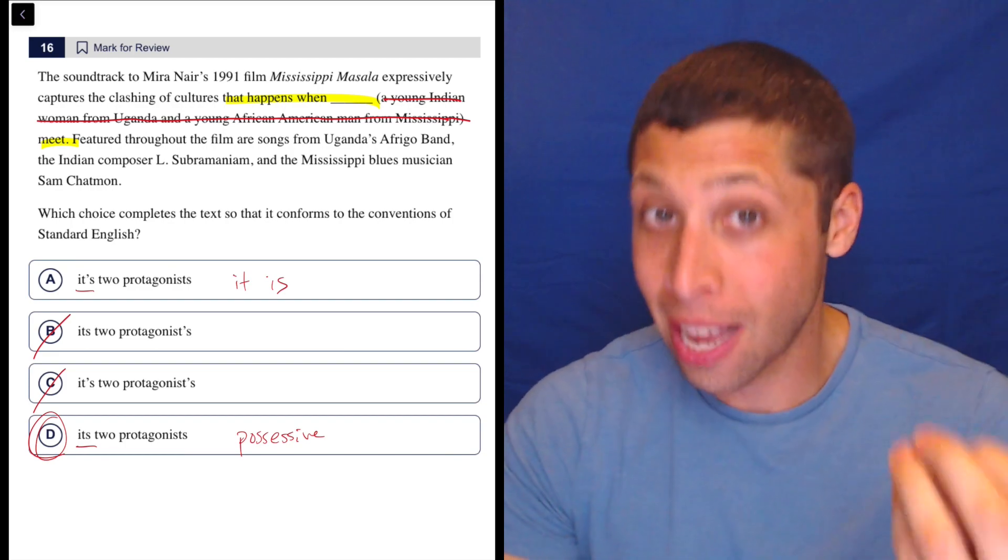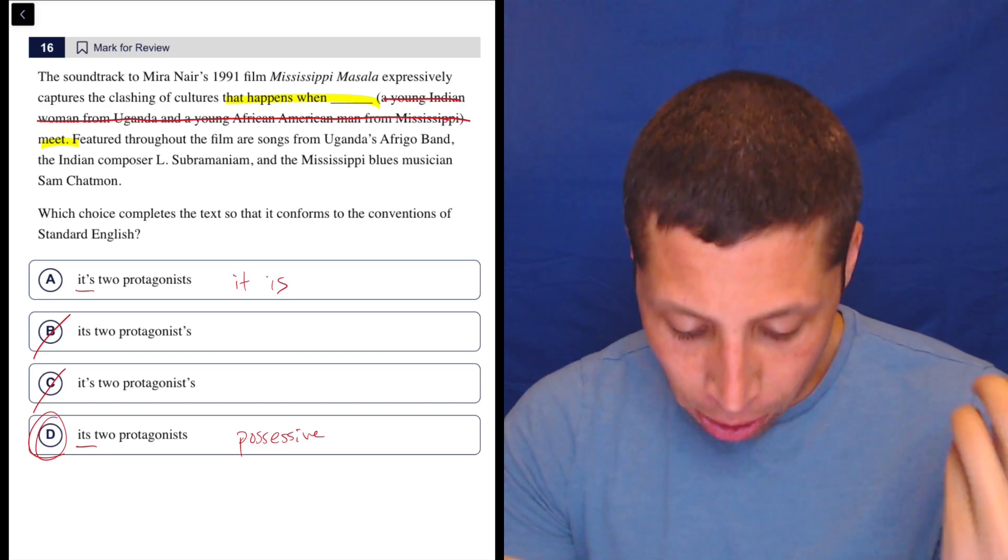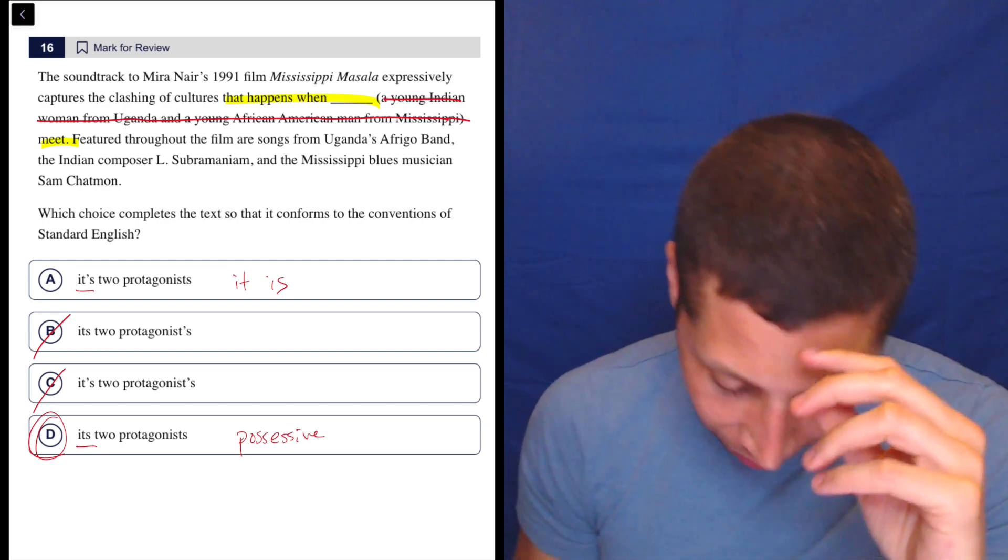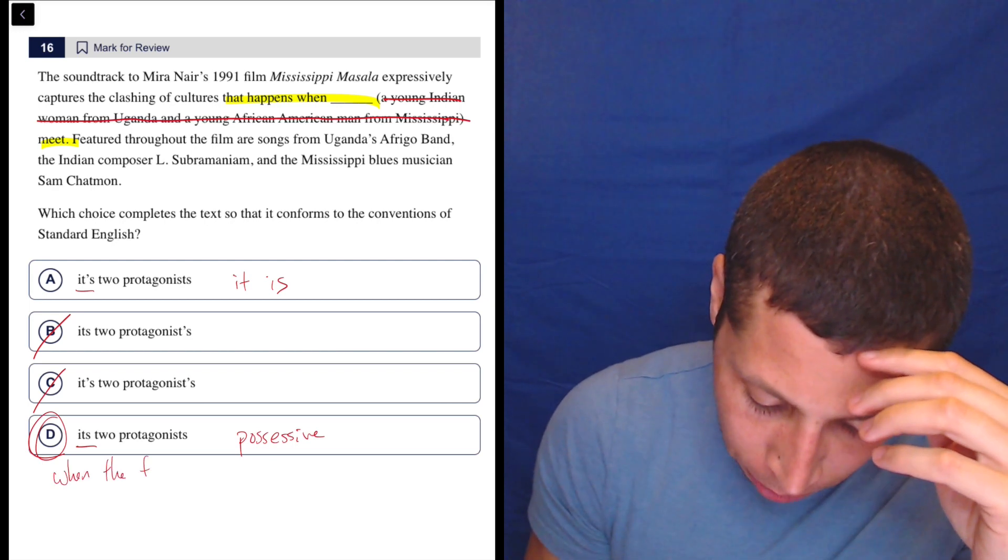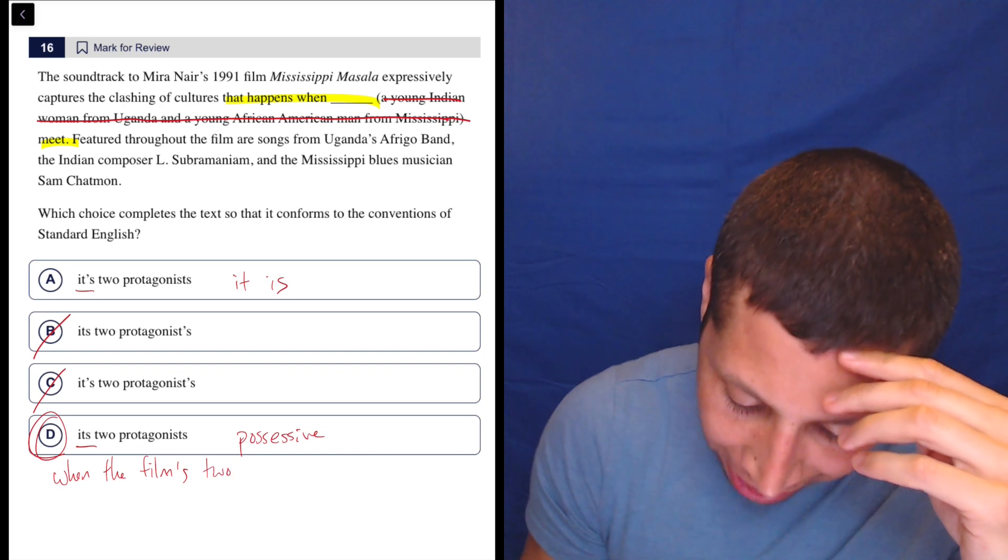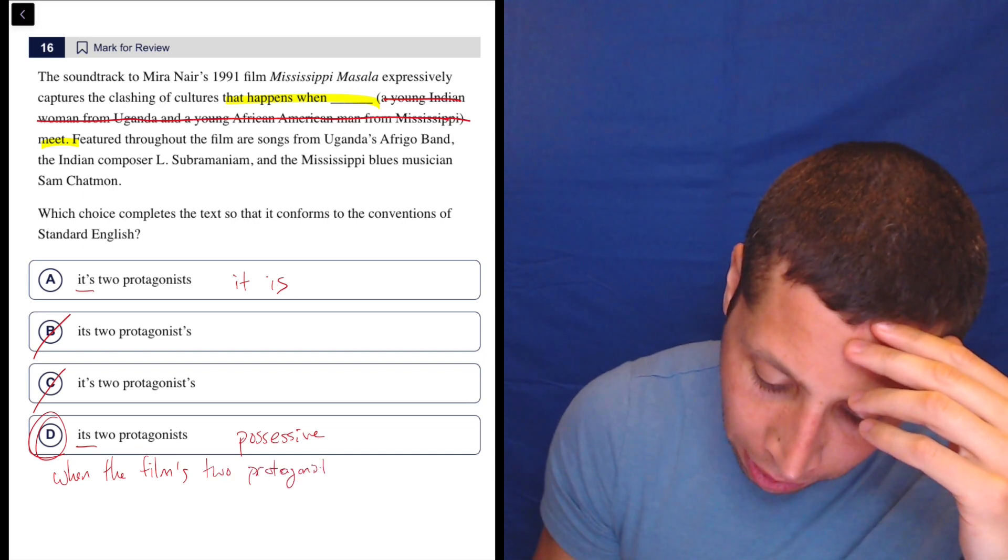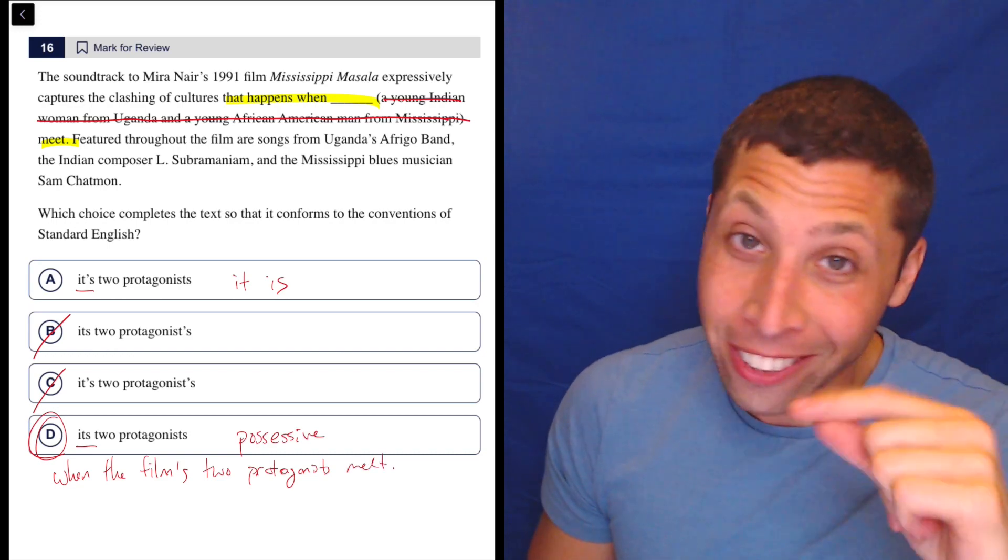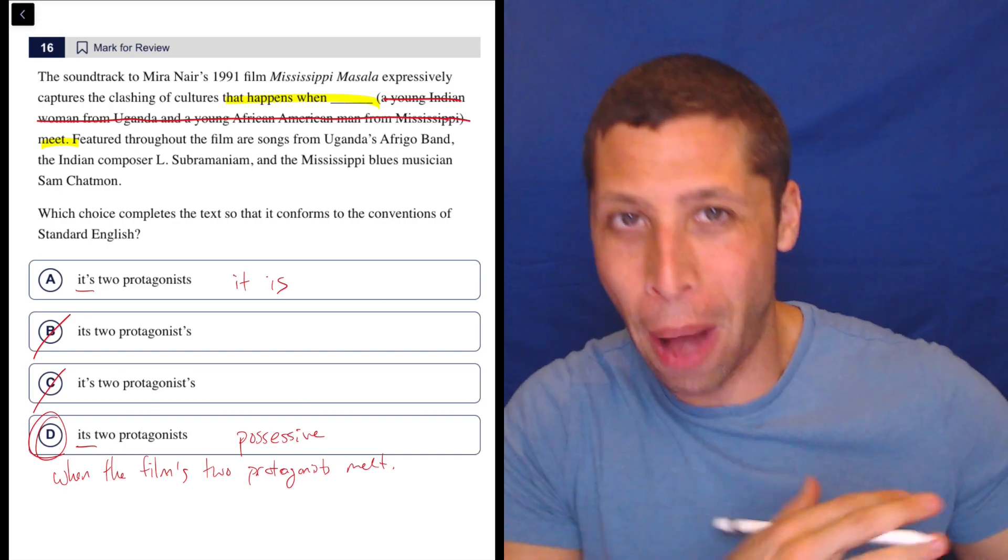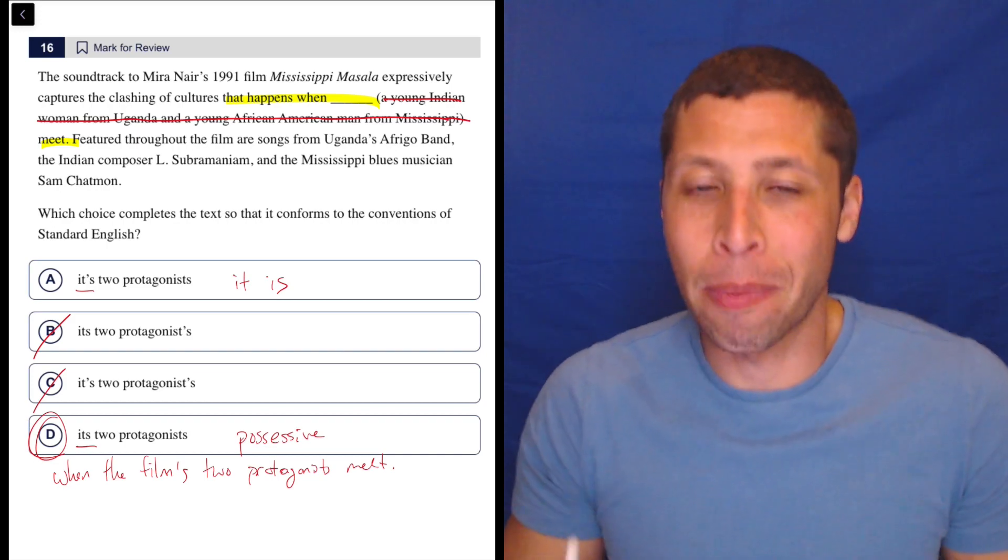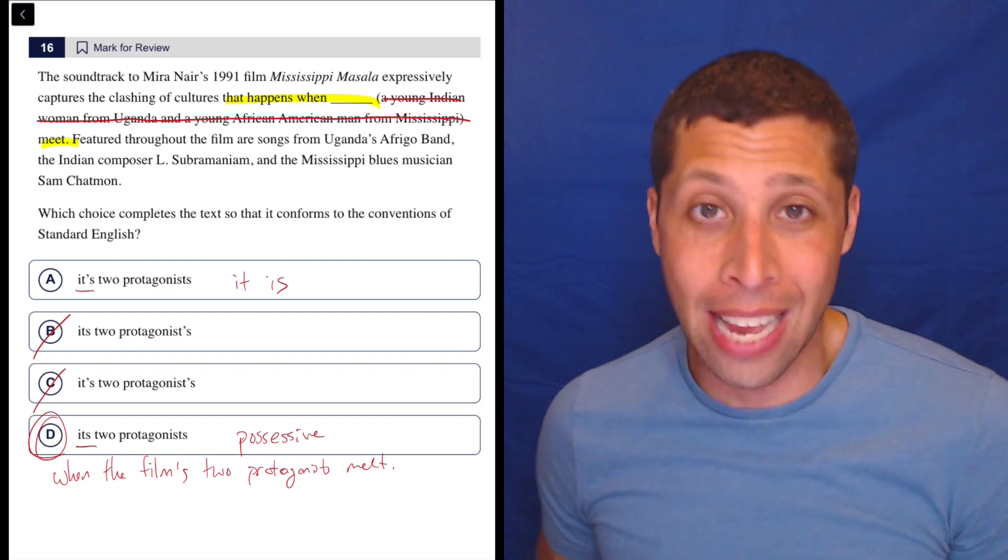But yeah, there's possession because it's the film. And so the film's two protagonists meet. In fact, if it said that, if it said that happens when the film's two protagonists meet, then we've got to use the apostrophe, right? So it's still the same thing. We're talking about the film. But if we talk about it with a pronoun, no apostrophe. We talk about it as the film, then yes, it gets an apostrophe because the protagonists belong to the film. The film possesses the protagonists.